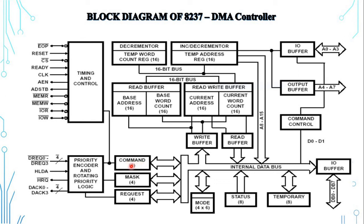The command register is an 8-bit register which controls the operation of the 8237. It is programmed by the microprocessor and cleared by the reset operation or master clear instruction. The command register is used to program the following features: enable or disable memory-to-memory transfer, enable or disable the DMA controller, normal or compressed timing, fixed or rotating priority, and type of DMA request — whether active high or low — and acknowledgement signal.